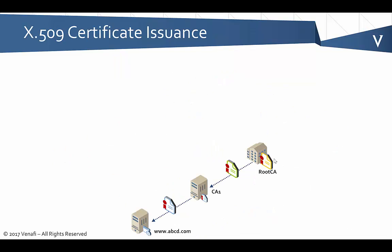Here what we've got is a basic hierarchy. We've got a root CA, an issuing CA — CA1 — and then we've got somebody that's going to set up a server, ABCD.com. They want to be able to get a certificate for that server. We're going to walk through all the way from the process of setting up the root CA, through getting a certificate for CA1, and then finally for ABCD. So let's go ahead and jump into this.